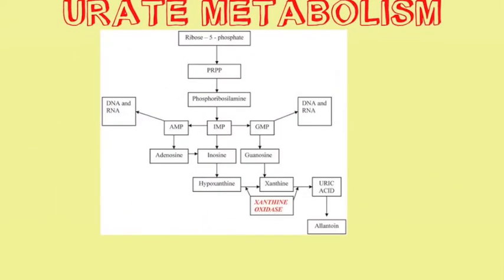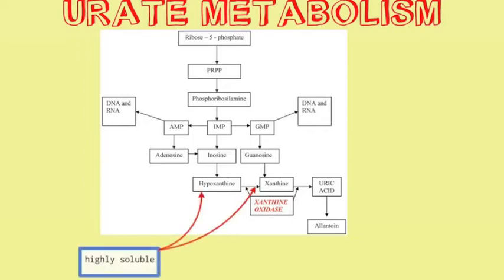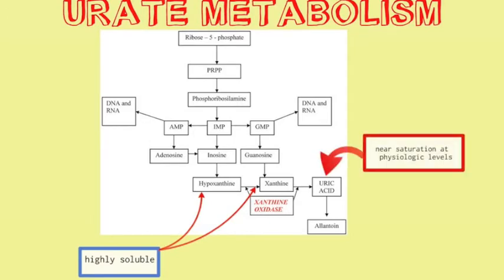RNA and DNA are catabolised, and hypoxanthine and xanthine are end results of that catabolism. They are then converted to uric acid through the enzyme xanthine oxidase. These two salts — xanthine and hypoxanthine — are highly soluble and so don't represent a risk of crystallisation. Uric acid, on the other hand, is very near to saturation at physiologic levels, so any phenomenon that increases blood serum uric acid has the propensity to create near-saturation conditions and thus crystal formation.